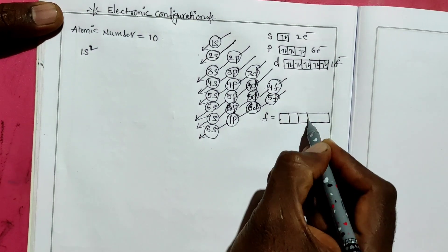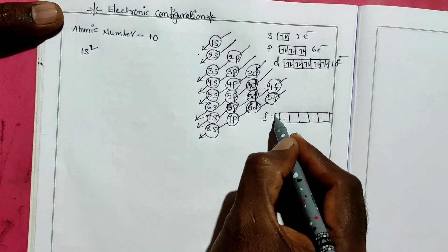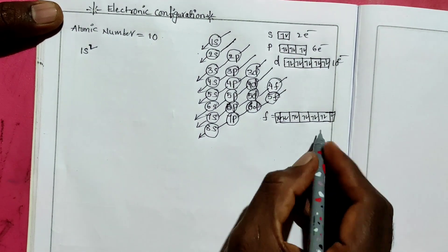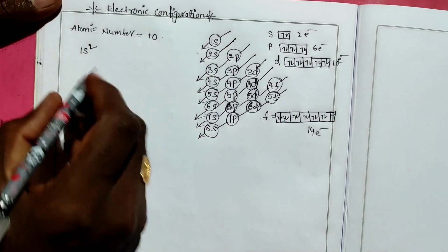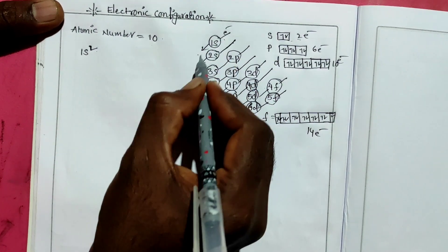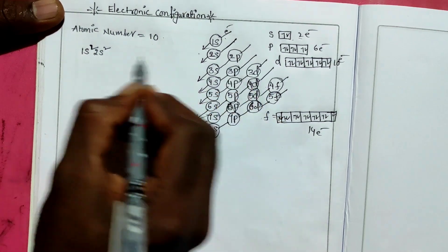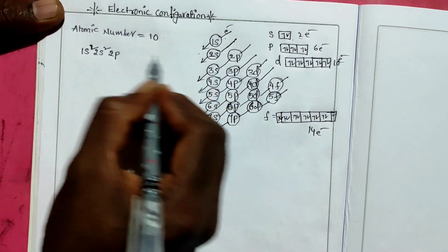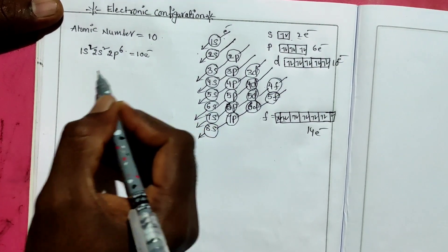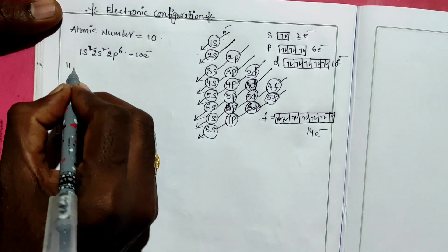So: s holds 2 electrons, p holds 6 electrons, d holds 10 electrons, and f holds 14 electrons across 7 orbitals. Based on that, for atomic number 10: 1s2, then electrons enter 2s so 2s2, then 2p6. Total: 2 + 2 + 6 = 10 electrons.